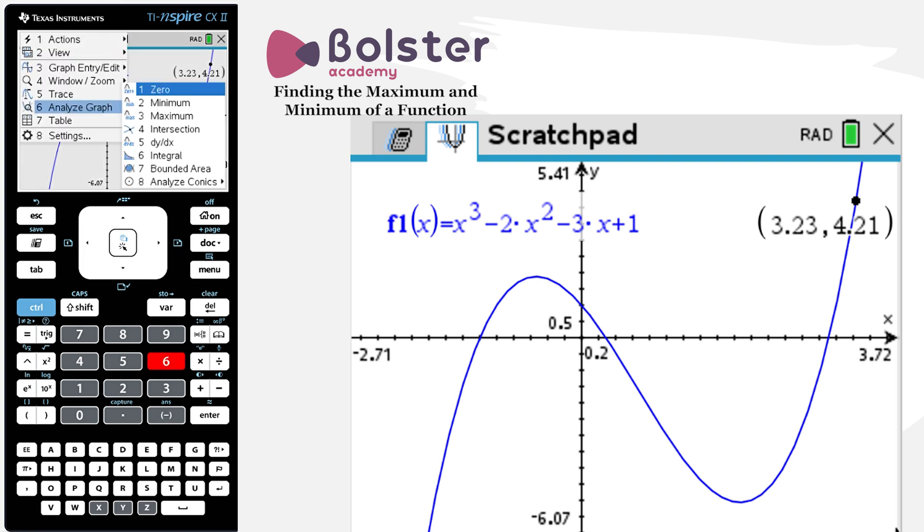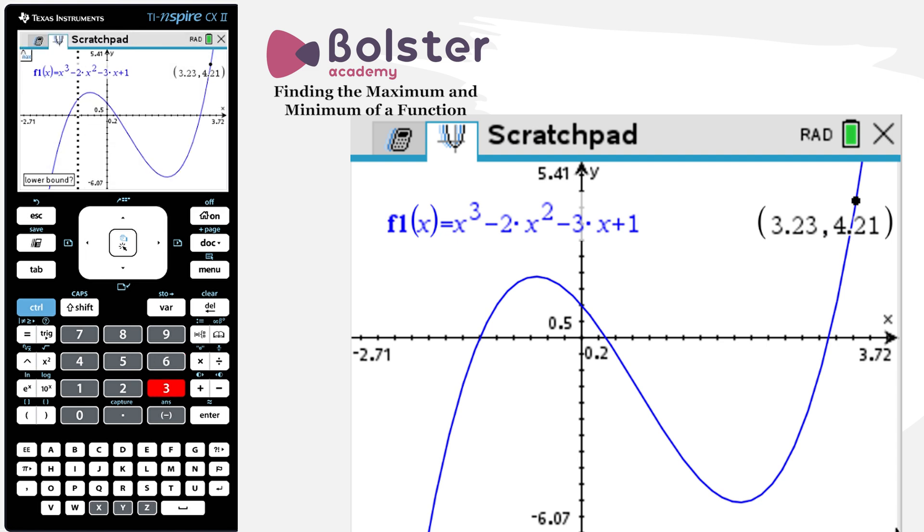So menu, analyze graph, maximum. And now I just want to choose the upper and the lower bounds to be quite close to that local maximum. And I can clearly see now the calculator is honing in on the point that I'm looking for.